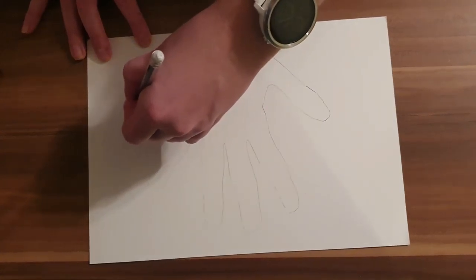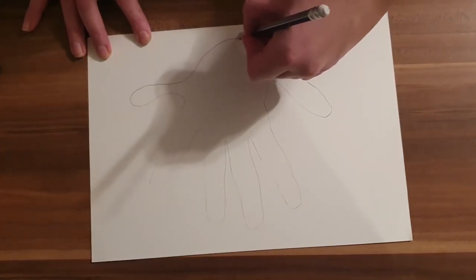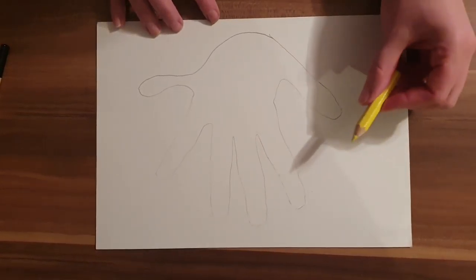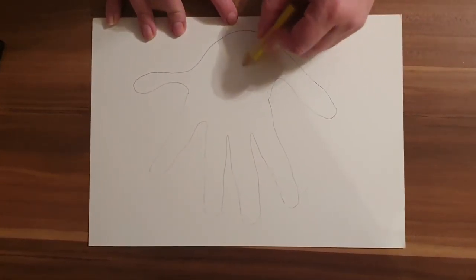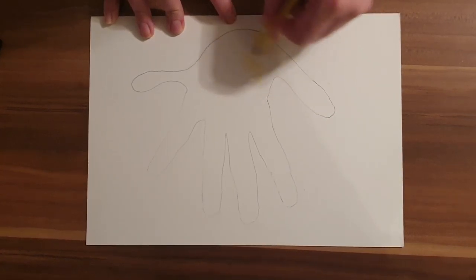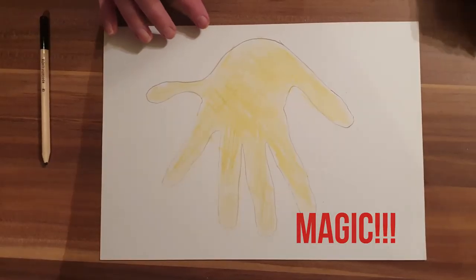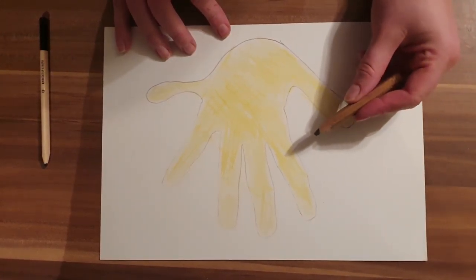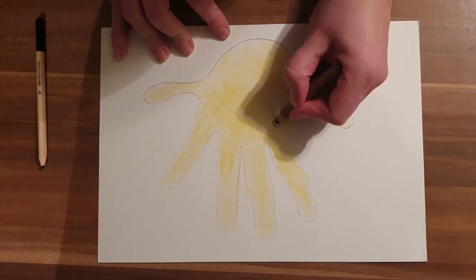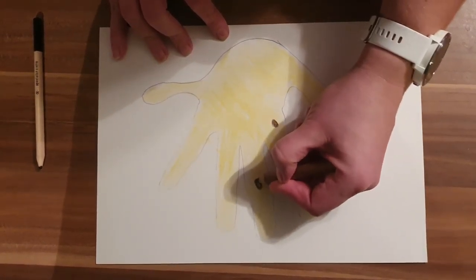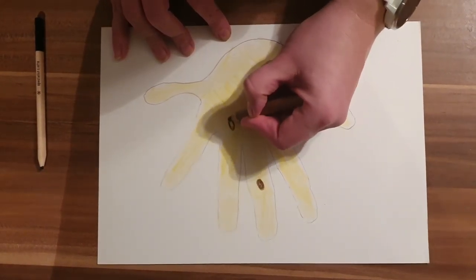The next thing we're going to color in our hand with our yellow coloring pencil. Then we're going to get our brown coloring pencil and we're going to start coloring in some brown spots all over the giraffe.